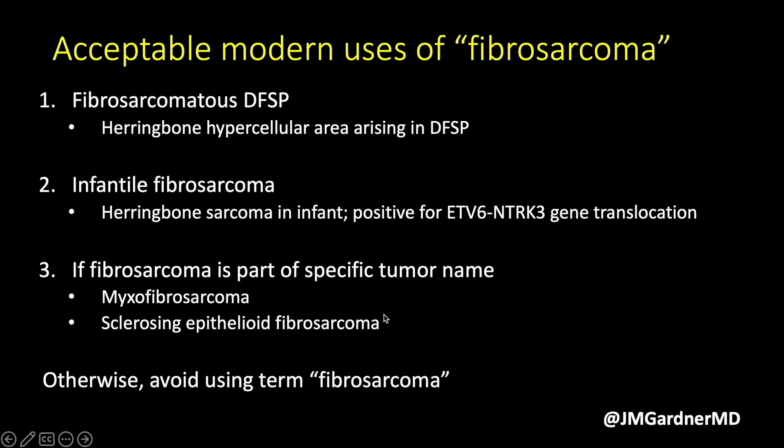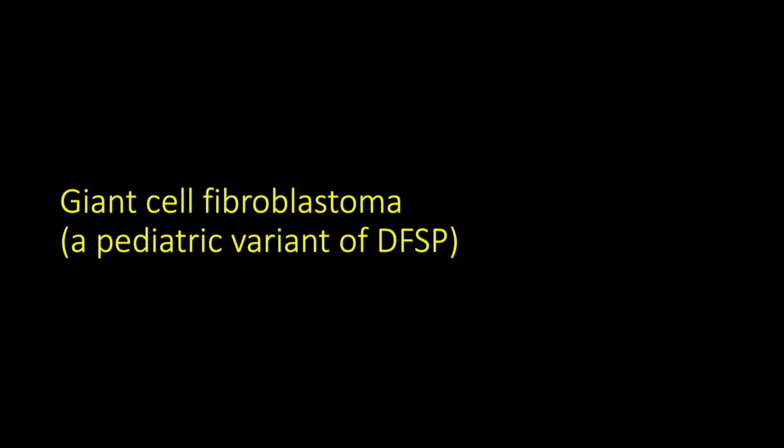The third scenario is when fibrosarcoma is part of a proper specific tumor name — for example, myxofibrosarcoma or sclerosing epithelial fibrosarcoma. These are not descriptive terms but proper names for specific tumor types. Sclerosing epithelial fibrosarcoma is probably on a spectrum with low-grade fibromyxoid sarcoma, and myxofibrosarcoma is more like a myxoid variant of undifferentiated pleomorphic sarcoma. Outside of those three categories, I basically do not use the term fibrosarcoma.